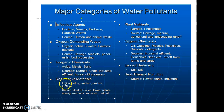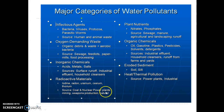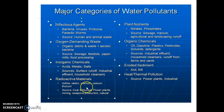Radioactive materials like iodine, uranium, and thorium pollute water. Sources include nuclear power plants and mining centers where radioactive materials mix with water. Natural sources such as volcanic eruptions also release radioactive materials.